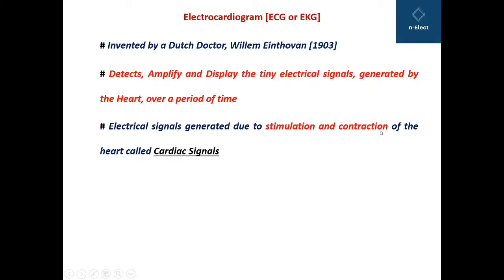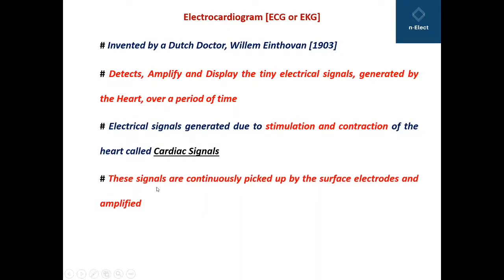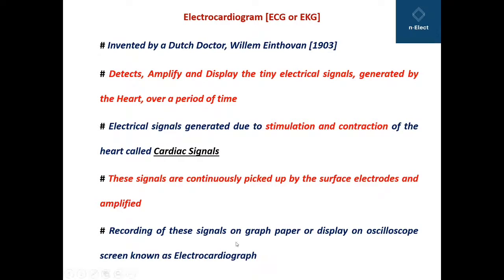Stimulation and contraction are the basic processes which continuously occur in the heart. These signals are continuously picked up by surface electrodes and then amplified. The surface electrodes are directly in contact with the patient's body, and since their amplitude is very small, they require amplification. Recording of these signals on graph paper or display on an oscilloscope screen is known as electrocardiograph, and the device is known as electrocardiogram.